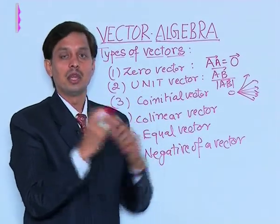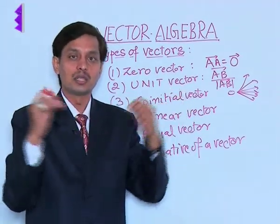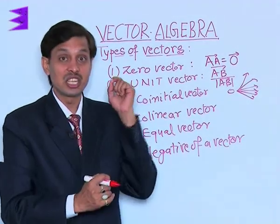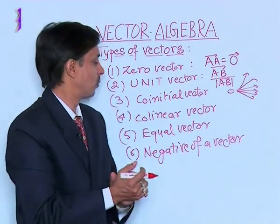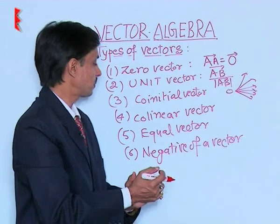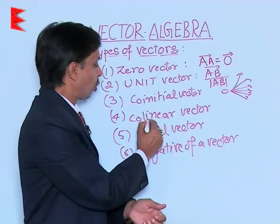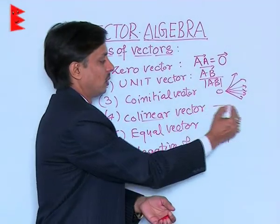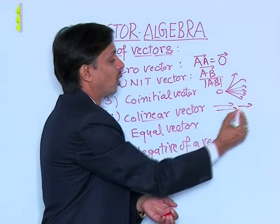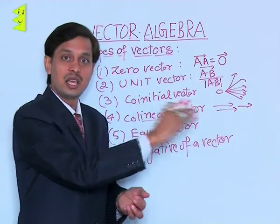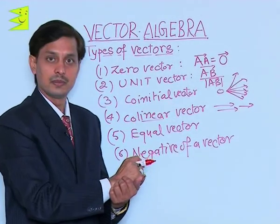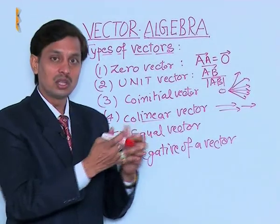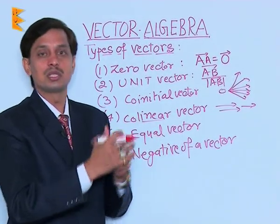Similarly, if a few vectors are terminating at the same point, such vectors are called co-terminal vectors. Collinear vectors are vectors that are parallel or have the same direction — they lie on the same line.